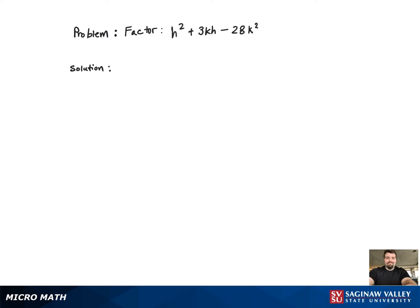For this factoring problem, we'll first notice that there's no coefficient on the h-squared term. This means inside of the binomials, the coefficient on the h-terms will just be 1.